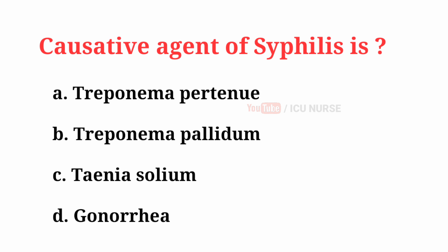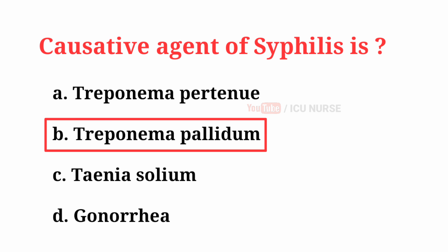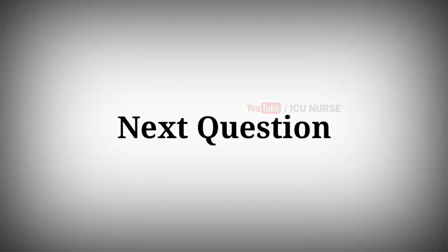The causative agent of syphilis is... The correct answer is B, Treponema pallidum.